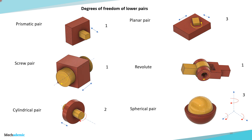The planar pair has 3 degrees of freedom. If you place a block on a flat ground, it can rotate about the z-axis (shown by the yellow arrow) and move in the x-axis and y-axis. So 3 degrees of freedom are allowed for the yellow part with respect to the red part.